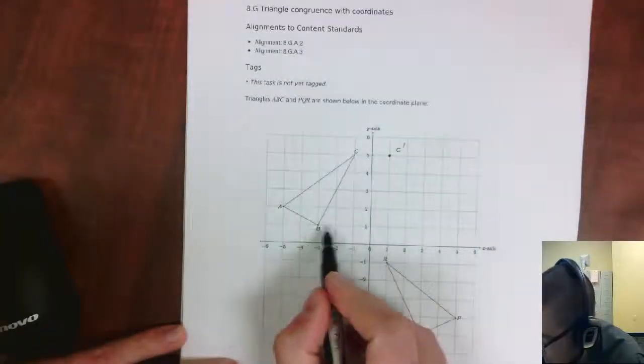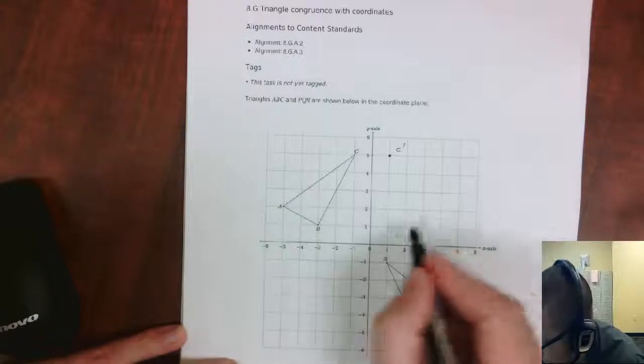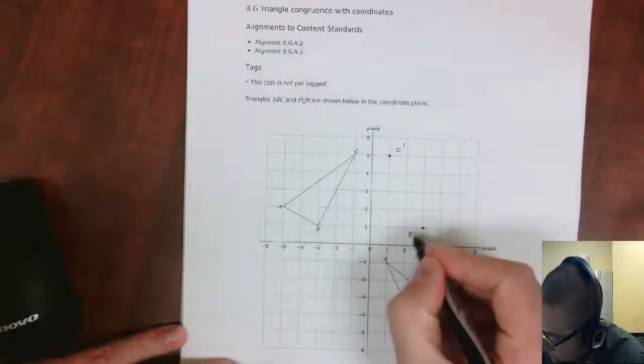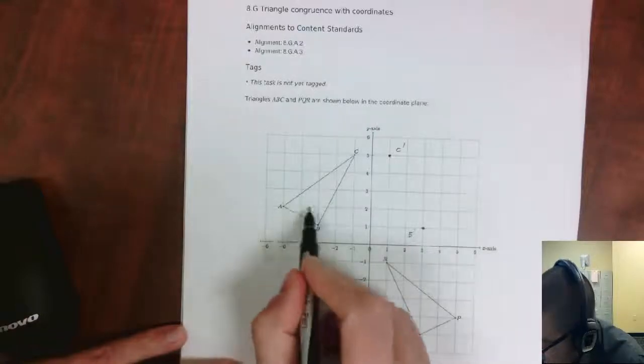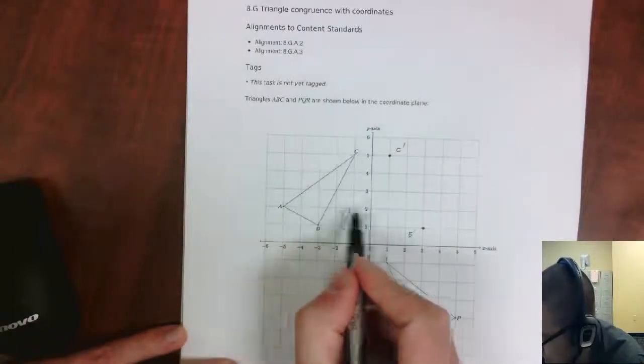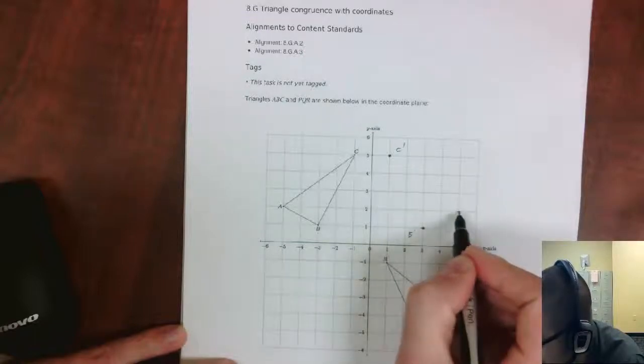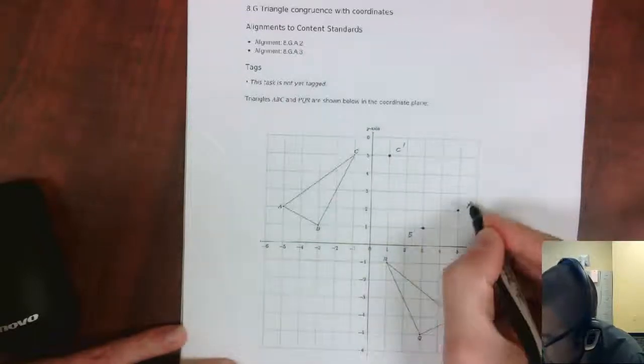And then B would go 1, 2, 3 away on this side, so 1, 2, 3 away on that side. This is B prime. And then A goes 1, 2, 3, 4, 5. 1, 2, 3, 4, 5 to that point right there. This is A prime.